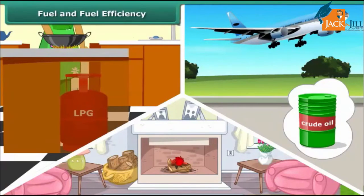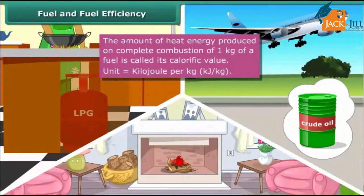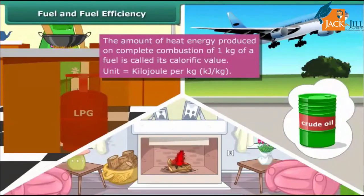All fuels do not burn efficiently. Fuel efficiency is determined by its calorific value. The amount of heat energy produced on complete combustion of 1 kg of a fuel is called its calorific value, and it is expressed in kilojoules per kg. The calorific value of LPG is more than wood or coal, which is why LPG is a more efficient fuel.